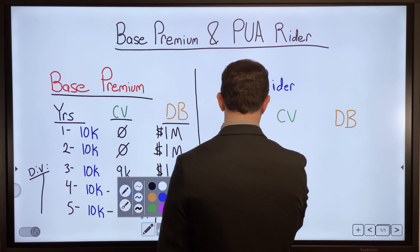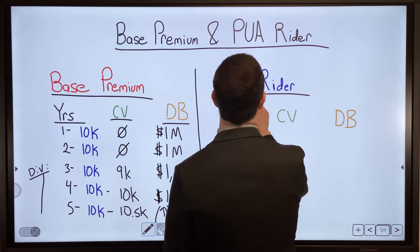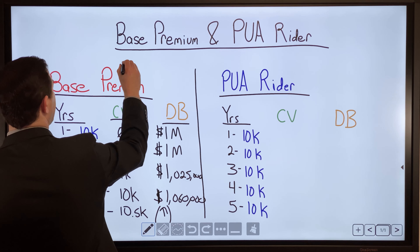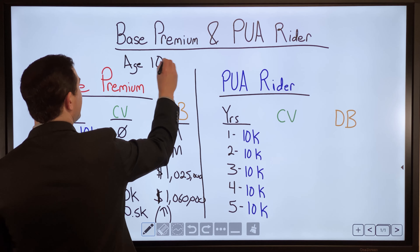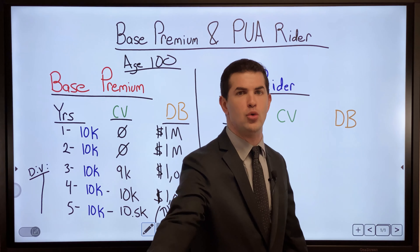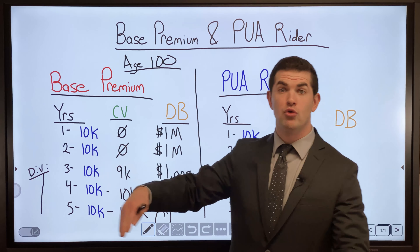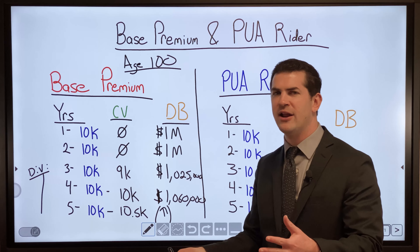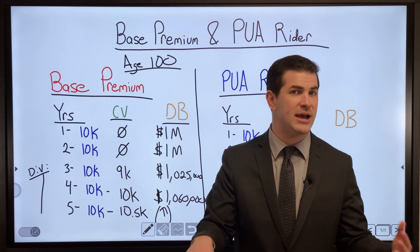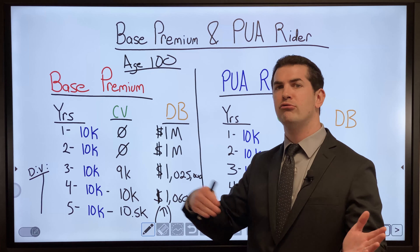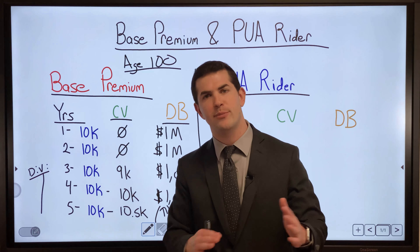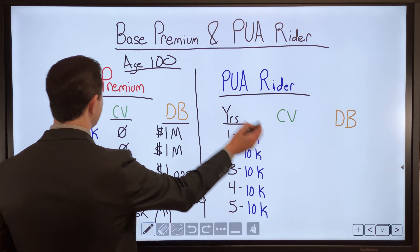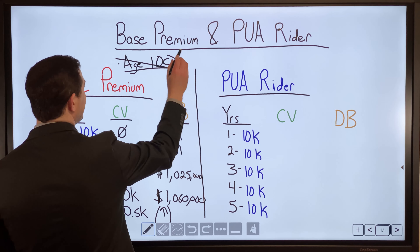Regarding the base premium: if you have a paid-up-at-age-100 product, the base premium will technically be due through age 100. You can stop paying it and let dividends and interest pay it through reduce paid-up or other options, but if you do nothing, that premium will be billed through age 100 or 121, depending on the product. It is a required premium unless you exercise a kill switch like reduce paid-up.